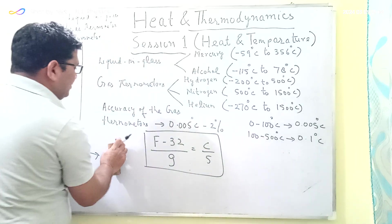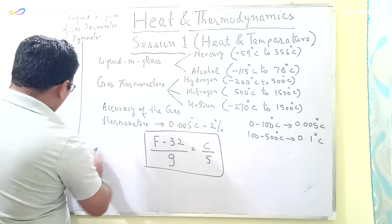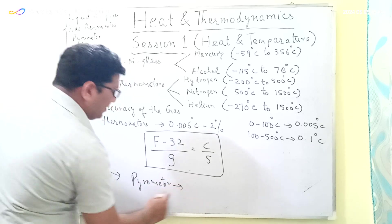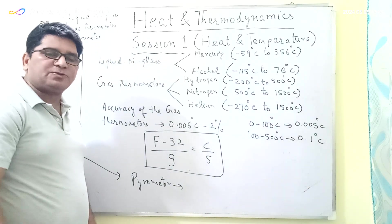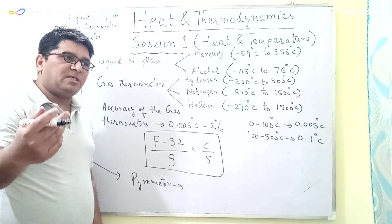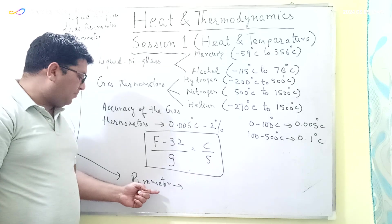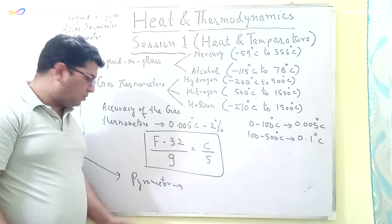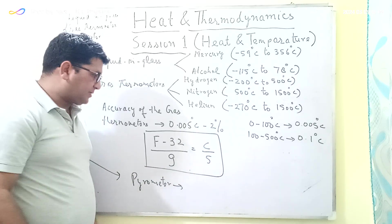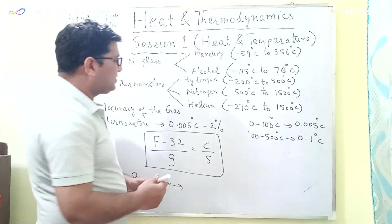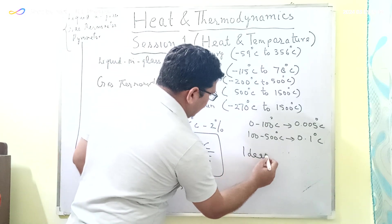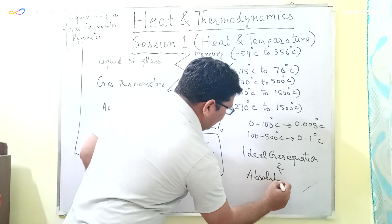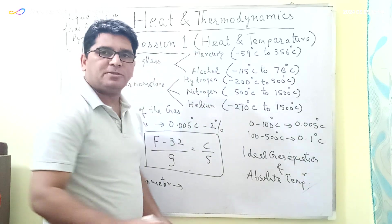One more instrument is the pyrometer, which is also used to measure temperature. Pyrometers are used to measure very high temperatures, and are normally used to measure the surface temperature of kilns and furnaces. The pyrometer uses the thermal radiation emitted from the surface of a body to calculate the temperature of that surface. In the next session, session two, I will be discussing the ideal gas equation and absolute temperature. Thank you very much, and have a nice day.